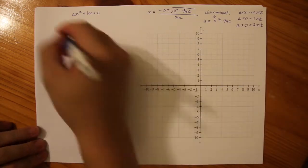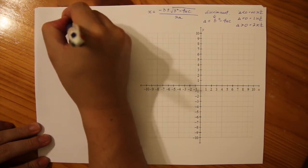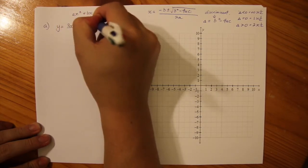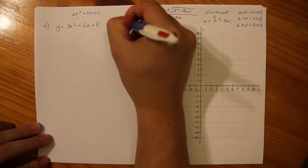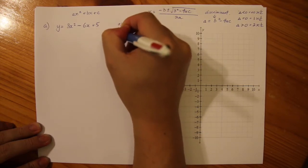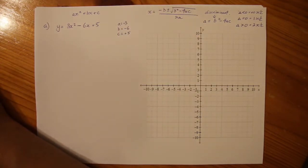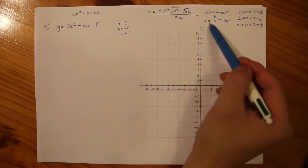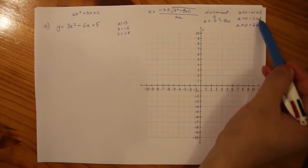Let's put that into practice with this example: Y equals 3X squared minus 6X plus 5. Reverting to the standard format, A is 3, B is minus 6, and C is 5. Sometimes instead of going straight to the quadratic formula, using the discriminant is a really good way to find what we're looking for.